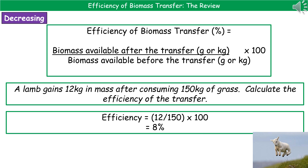The last thing we need to do is work out how to calculate the efficiency of biomass transfer. Because it's an efficiency, the answer will be a percentage. To calculate it, take the biomass available after the transfer divided by the biomass available before the transfer, then multiply by 100. One thing to be careful of: make sure the question hasn't given one value in grams and another in kilograms — ensure both values are in the same unit before calculating.